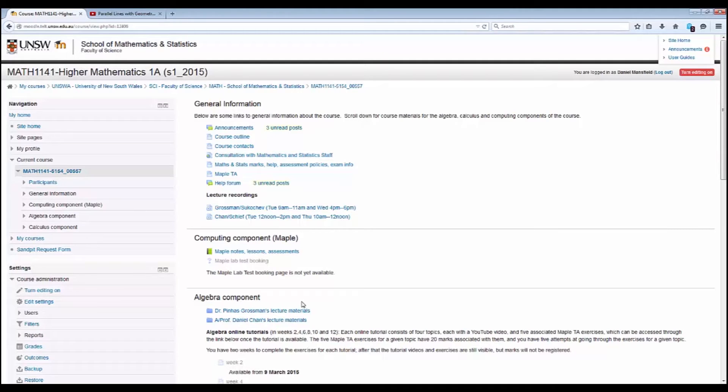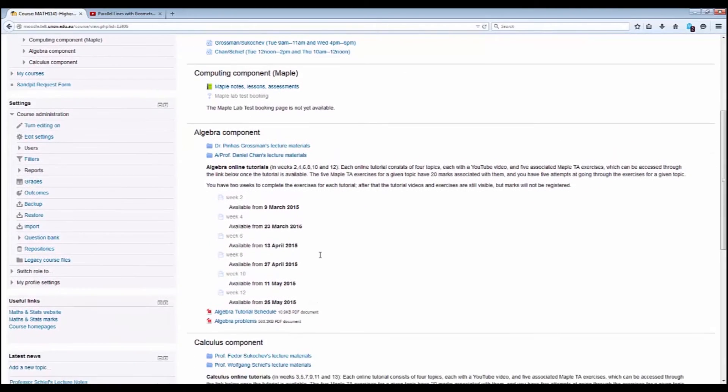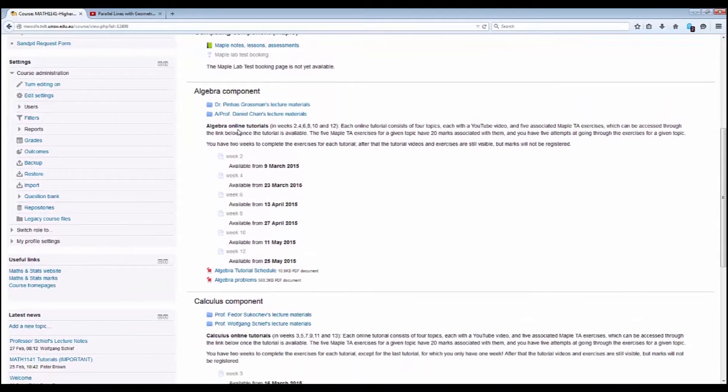So how do you go about doing an online tutorial? You begin by going to the Math 1141 Moodle page. You scroll past the general information and the computing component and you scroll down to Algebra and Calculus. Let us read of this together. The Algebra online tutorials are in Even Weeks. Each online tutorial consists of four topics, each with an associated YouTube video and Maple exercises. Click the link below to access the tutorial.